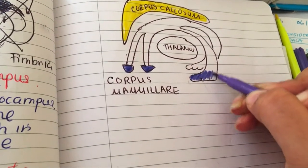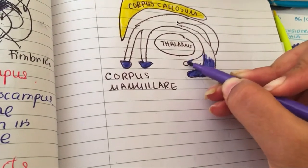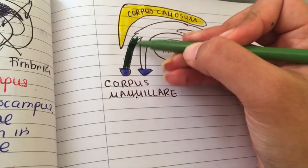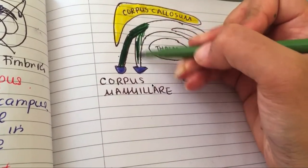So in a way the fornix separates the corpus callosum from the thalamus, and here you can see also the mammillary bodies on the edges.